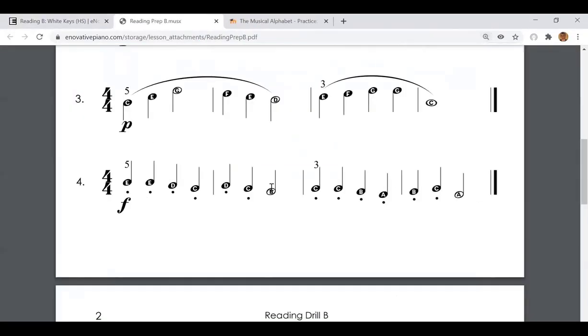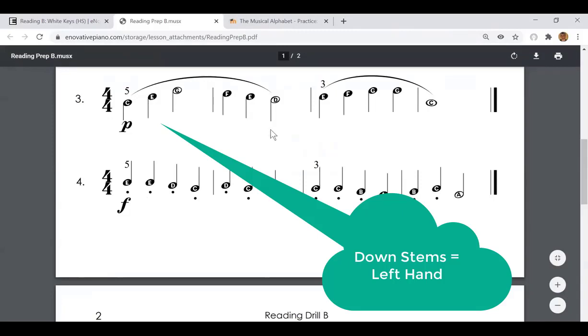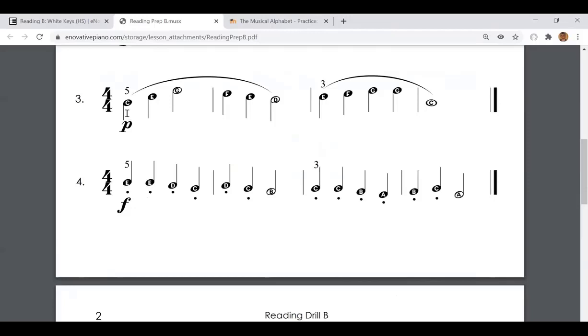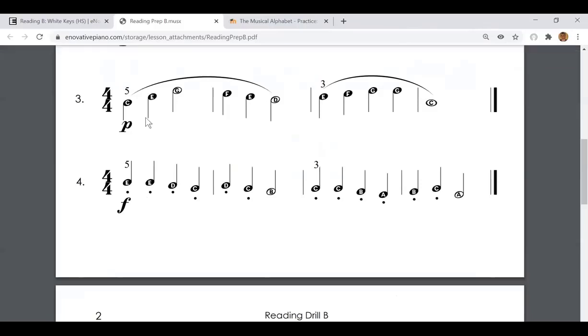So number three, the first thing I need to notice is that it's for my left hand. I know that because the stems go down. If you play this with your right hand, it will be marked wrong. So it has to be played with your left hand. It starts with a C, so that means your pinky of your left hand, five is your pinky, is going to be on C.